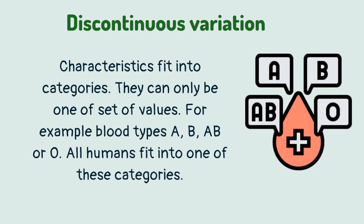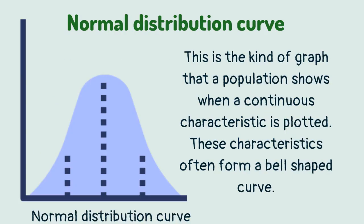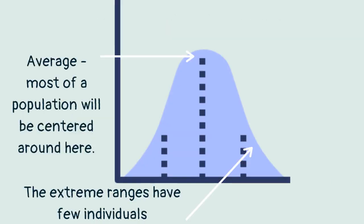All humans fit into one of these categories. A normal distribution curve is the kind of graph that a population shows when a continuous characteristic is plotted. These characteristics often form a bell-shaped curve. Most of a population will be centered around the average, while the extreme ranges have few individuals.